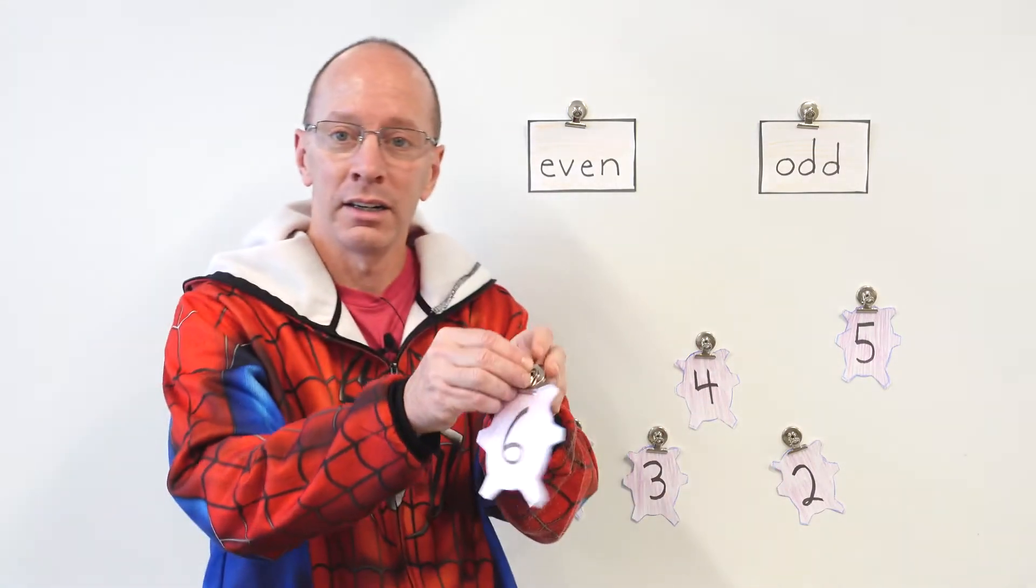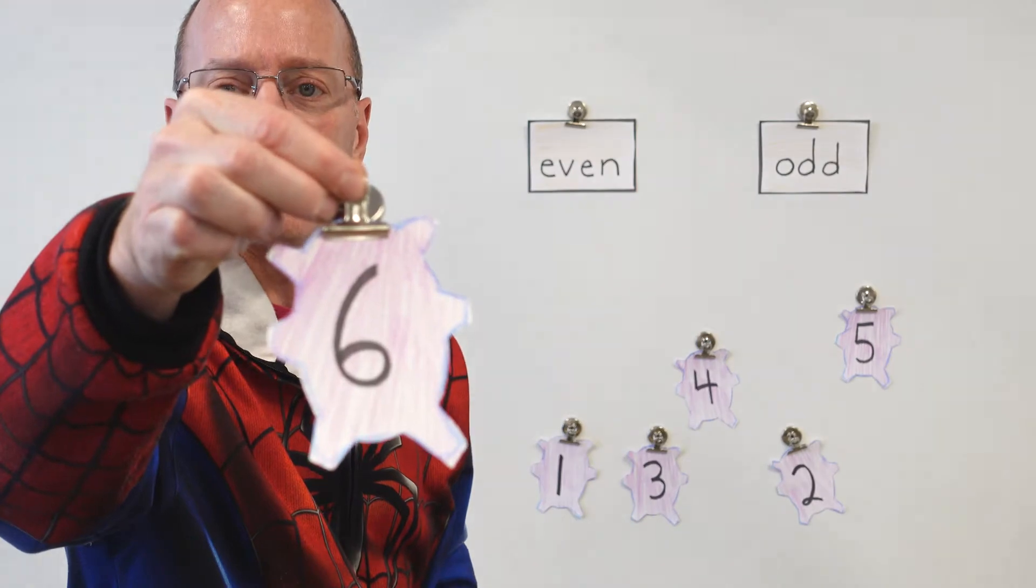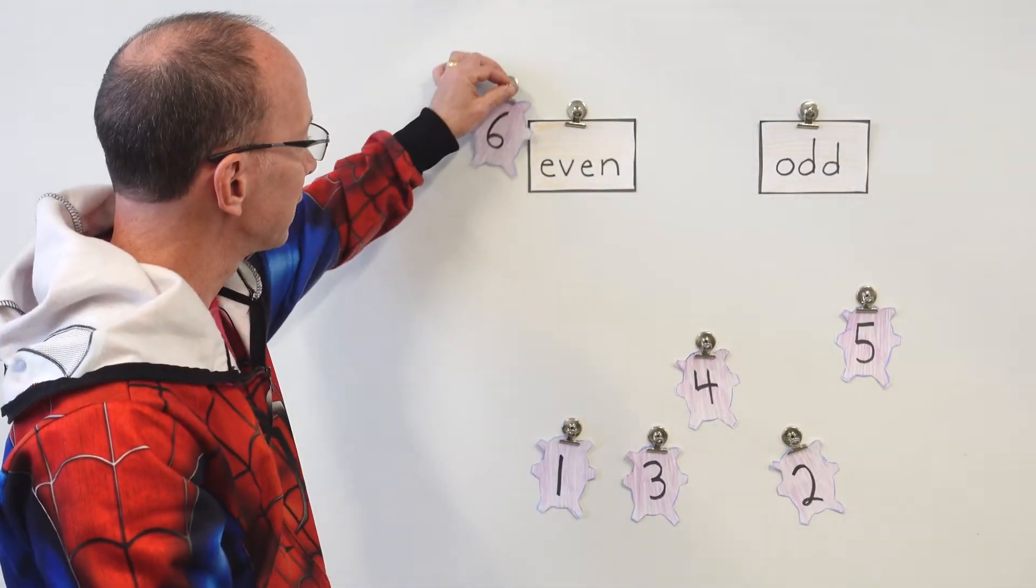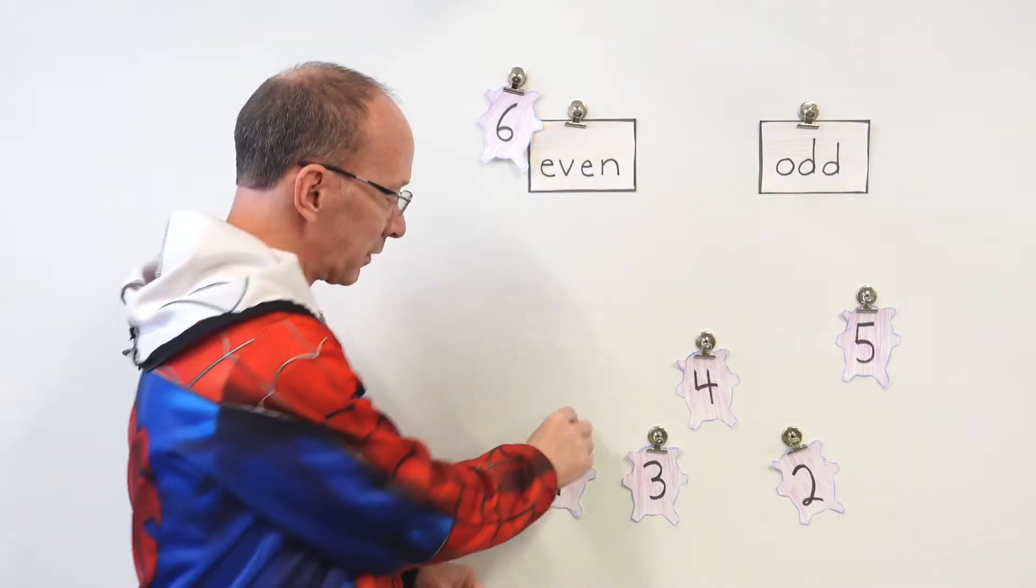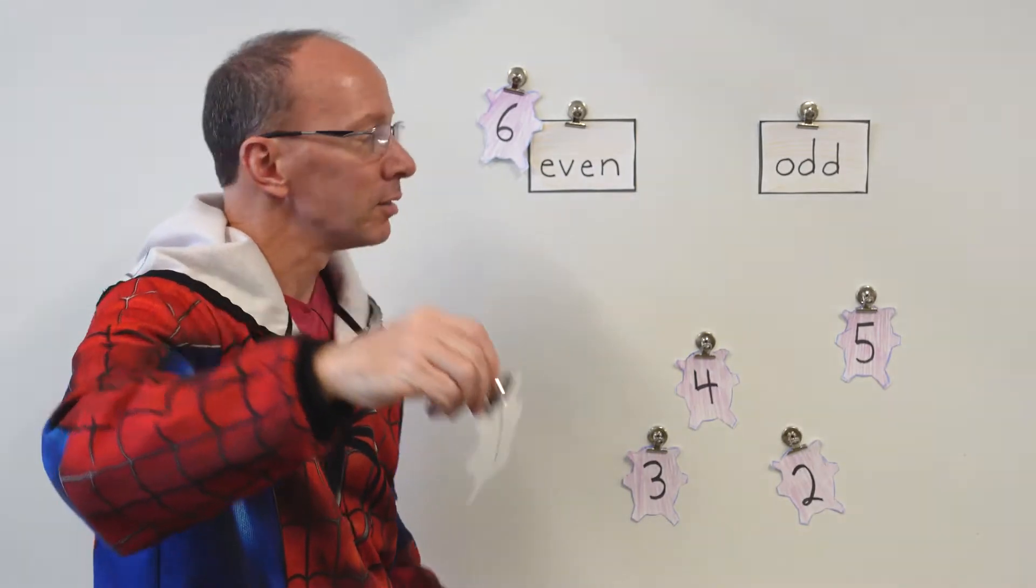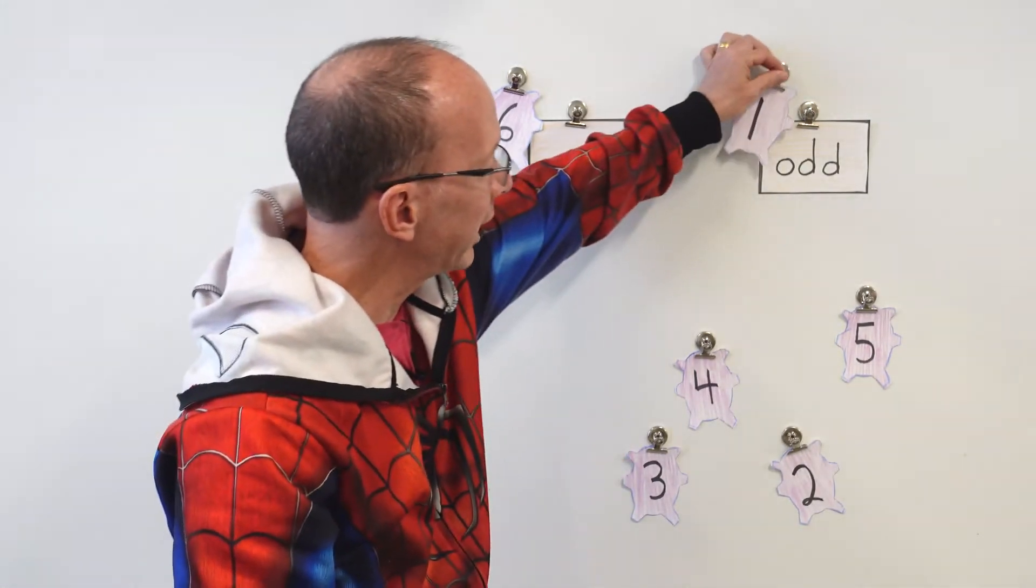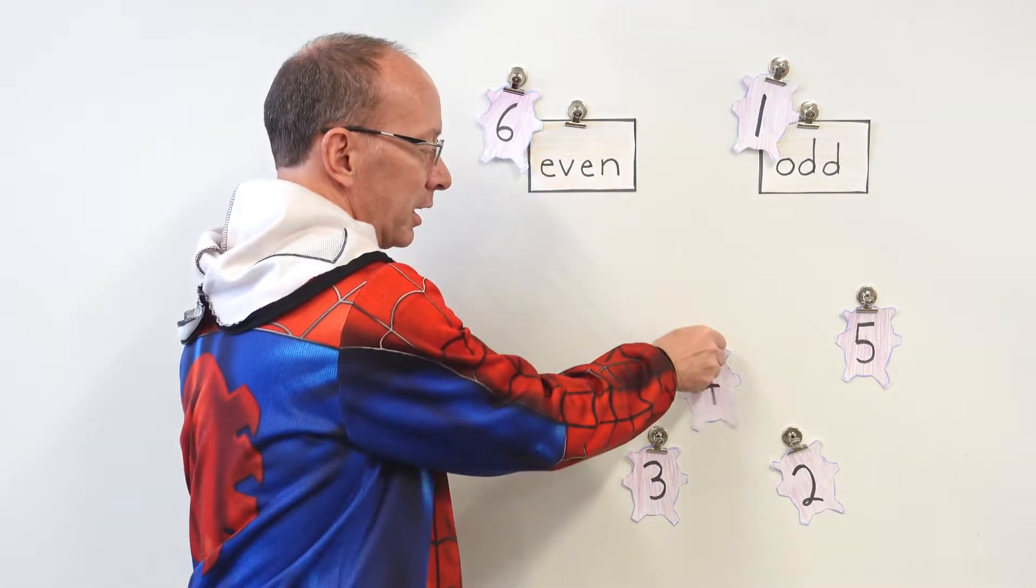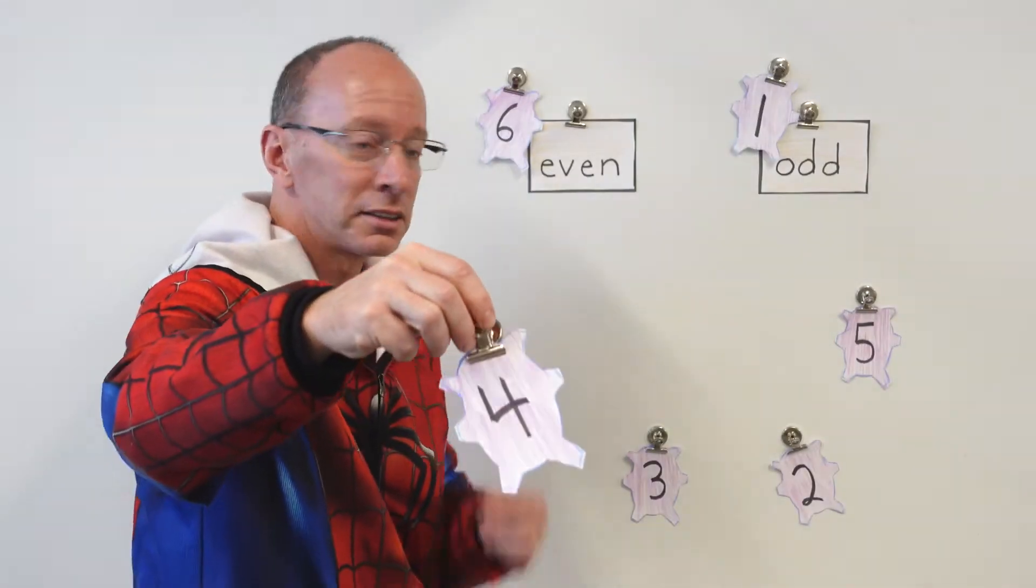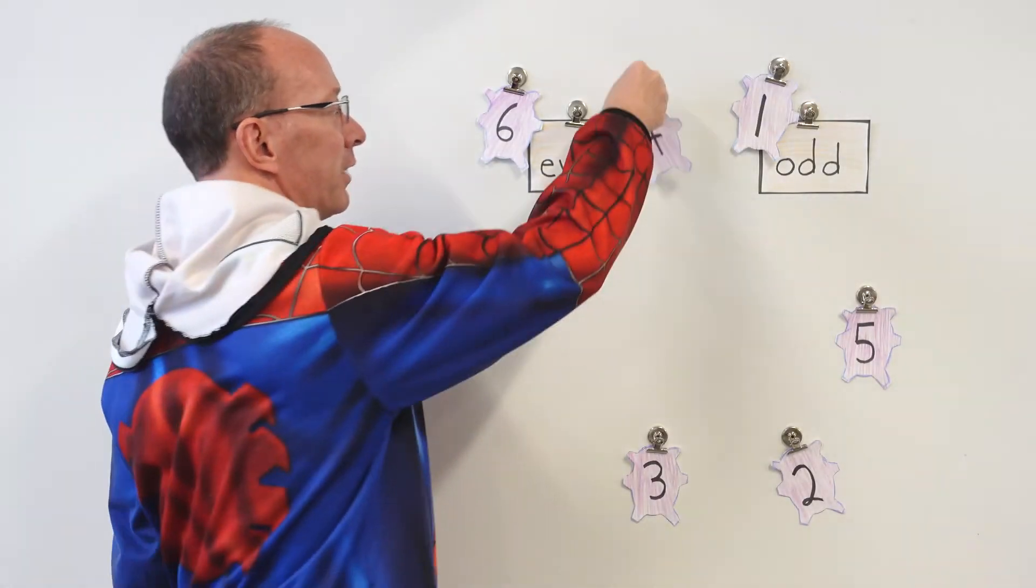All right. Let's take a look at this right here. Where does that one go? You're right, goes in the even box. Put that right there. Here we go. Got the number 1. Where does that go? Yep. You're right. Right over here in the odd box. Here is the number 4. Somebody just said put that in the even box. All right. Thank you very much.